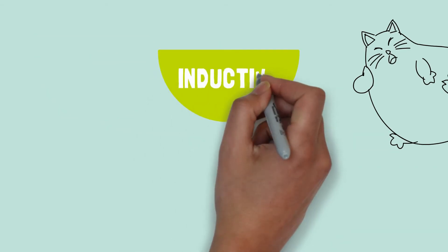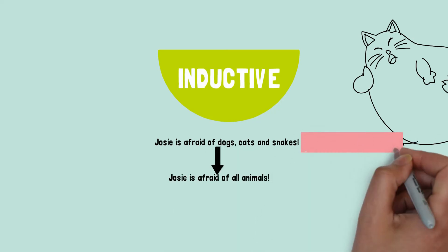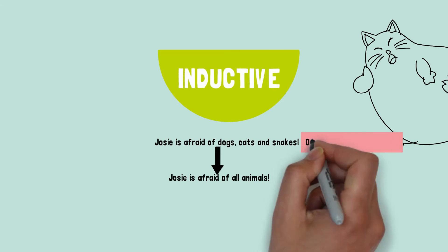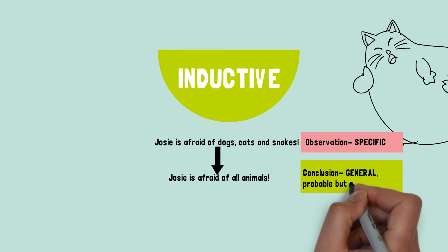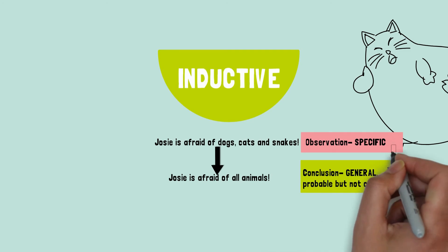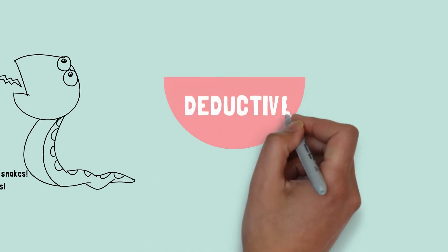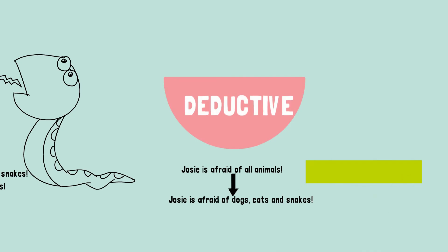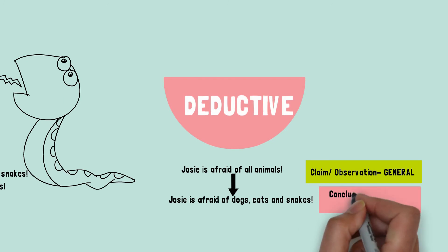Let's try and flip them into deductive arguments. In an inductive argument, I would say: Josie is afraid of dogs, cats and snakes — this is a specific claim — so Josie is afraid of all animals, which is a general conclusion. Changing it into a deductive argument, it could look like this: Josie is afraid of all animals — this is a general claim — therefore Josie is afraid of dogs, cats and snakes, which is a specific conclusion.